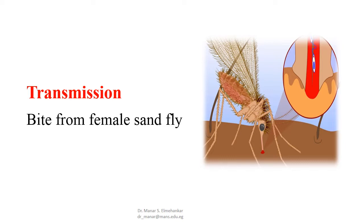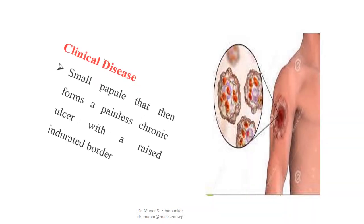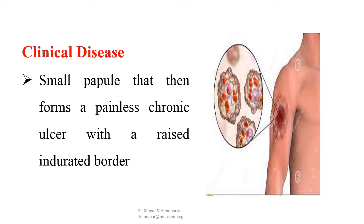Firstly, transmission occurs through the bite of female sand flies, either Phlebotomus papatasi or Lutzomyia species. For clinical disease, the site of lesion is the same as the site of the bite, and the lesion appears as a small papule that then forms a painless chronic ulcer with a raised indurated border.